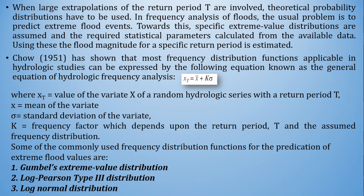Chow in 1951 showed that most frequency distribution functions applicable in hydrologic studies can be expressed by the general equation of hydrologic frequency analysis: x_T = x̄ + k·σ, where x_T is the value of variate x for return period T, x̄ is the mean, σ is the standard deviation, and k is the frequency factor. Commonly used distributions include Gumbel's extreme value distribution, Log-Pearson Type III, and log-normal distribution.